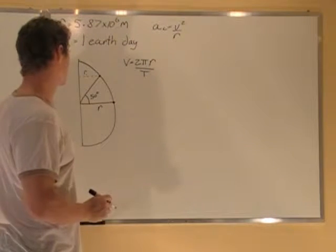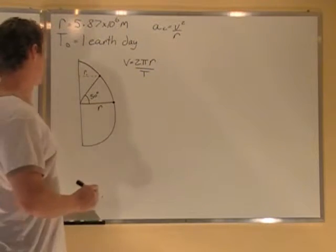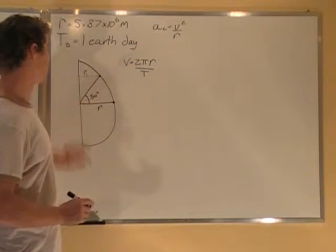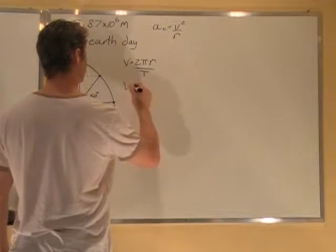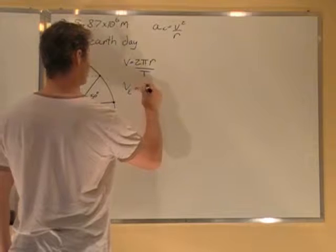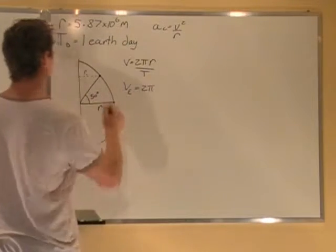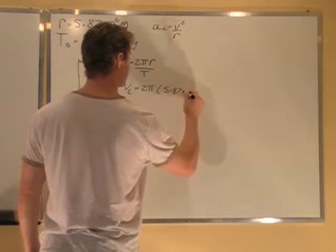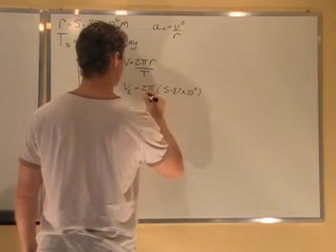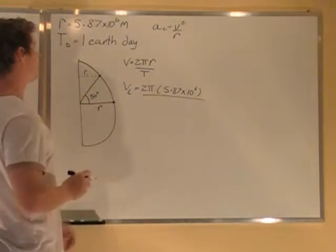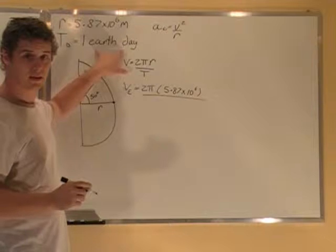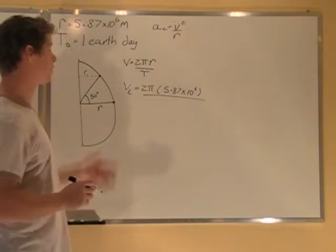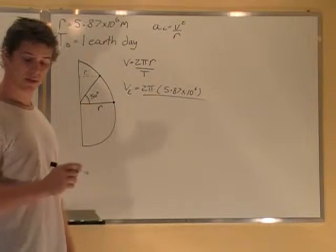So let's start off with at the equator. At the equator we know the radius, let's figure out the velocity. V at the equator equals 2π radius, 5.87 times 10 to the sixth, all over the period T. So this is in days, we need this in seconds. So before we can put this in here, we can't just put 1 in there, we have to put it in seconds, we have to have the right units. So let's convert it to seconds.